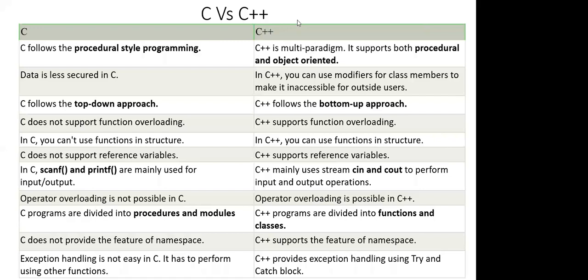In C, scanf and printf are mainly used for input and output. In C++, we use streams — cin and cout — to perform input and output operations. To get input from the user, we use cin; to print output on the screen, we use cout. Operator overloading is not possible in C — the same operator plus being used in multiple ways — but in C++ we can use operator overloading.